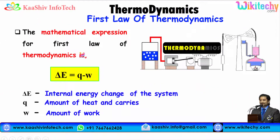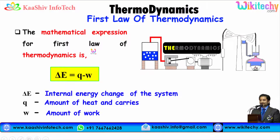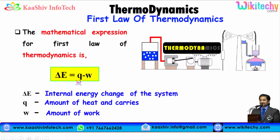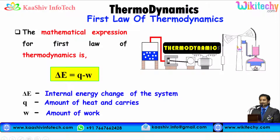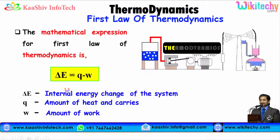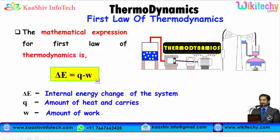Here is the mathematical expression for the first law of thermodynamics: delta E is equal to Q minus W. Delta E is the energy in the system, which is equivalent to the amount of heat carried in minus the amount of work.